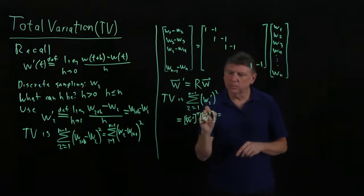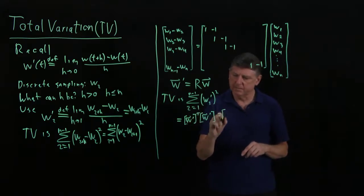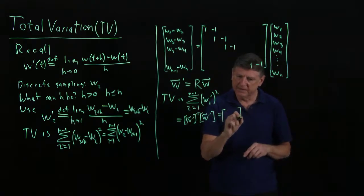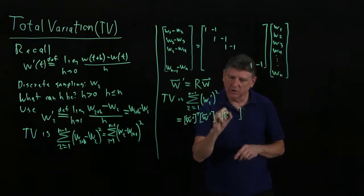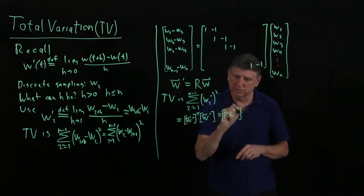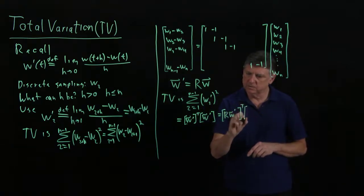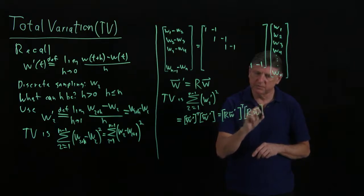And that has to equal, well now w prime, what I can now do is I can say, well that w prime is R times w prime transpose, and that is R times w.